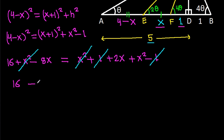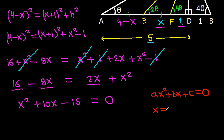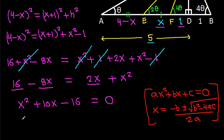So it is 16 minus 8x equals 2x plus x squared plus x squared. So x squared plus 10x minus 16 equals 0. For the quadratic equation ax squared plus bx plus c equals 0, x equals minus b plus or minus square root of b squared minus 4ac, all over 2a. Here a is 1, b is 10, and c is minus 16.